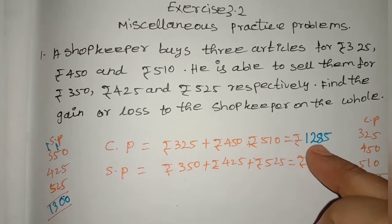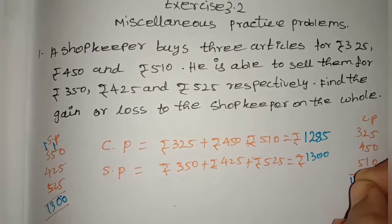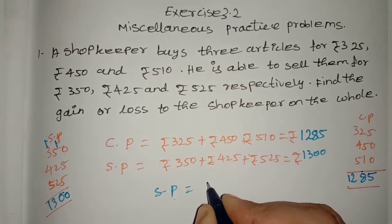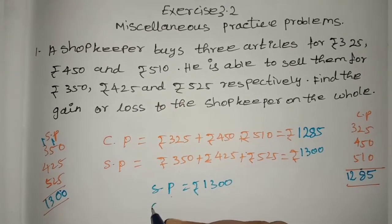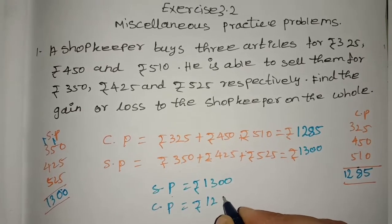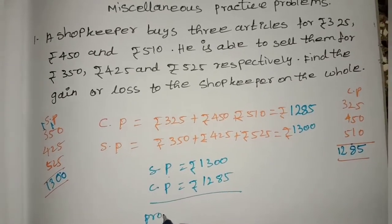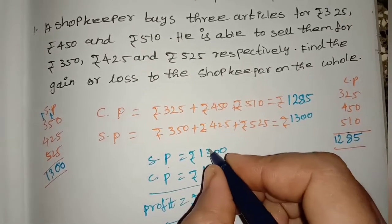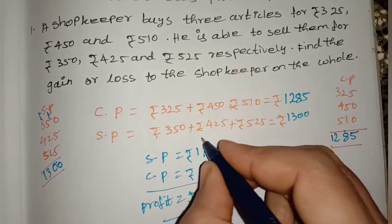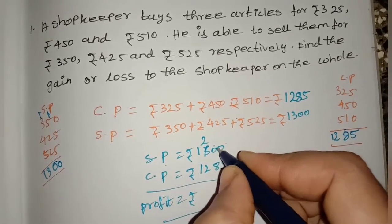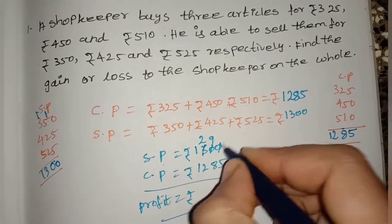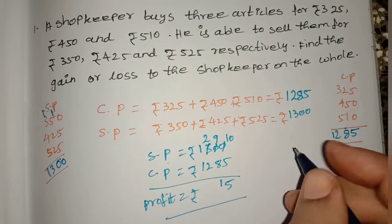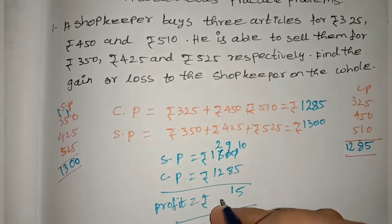Selling price is 1300 and cost price is 1285. We compare the cost price and selling price. As the selling price is greater than the cost price, there is a profit. Selling price minus cost price gives us 15 rupees profit.